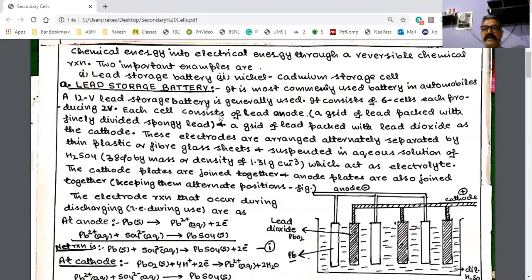This cell is the battery. It consists of lead anode and lead dioxide, which is packed in lead grid as cathode. The lead is applied in lead. The lead dioxide allows us to create cathode in lead. These electrodes are arranged in an alternate position. They are arranged alternately. It is separated by thin plastic or fiberglass sheet.